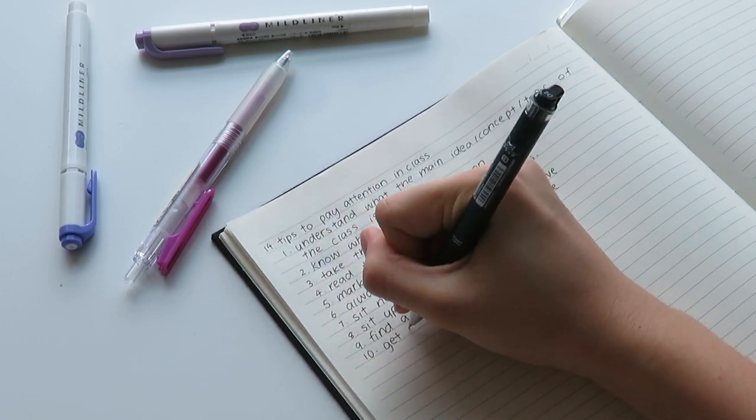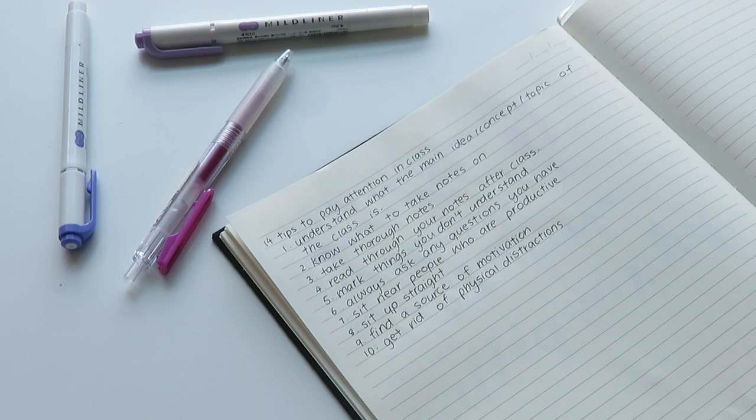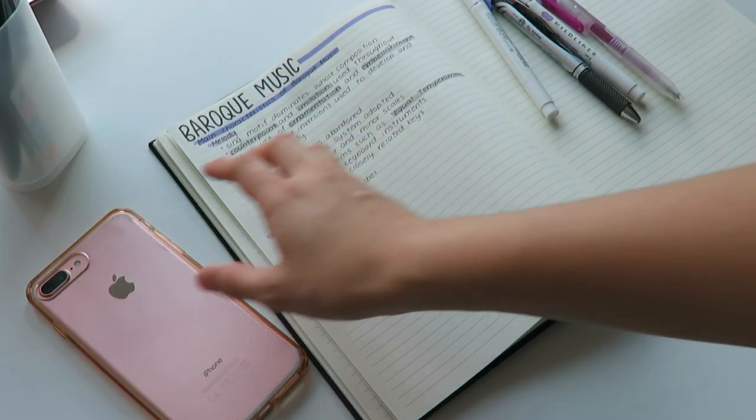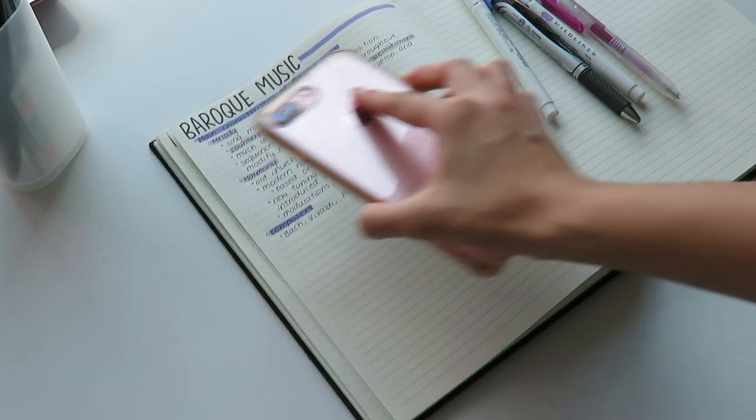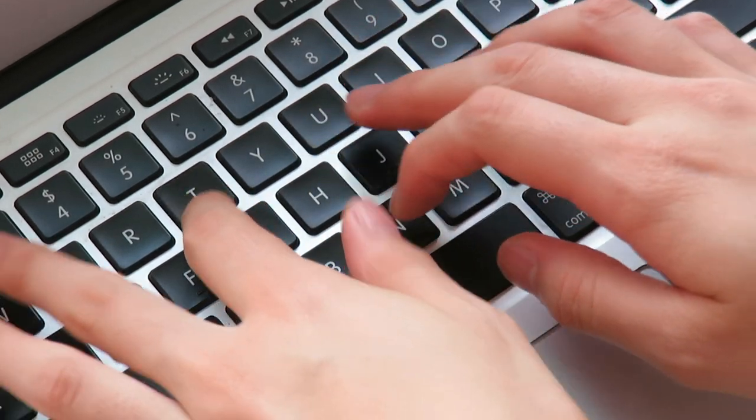The tenth tip is to get rid of physical distractions. This is something that I absolutely stand by. Although it may seem obvious, it is still very overlooked and one of the main causes of being distracted. The obvious physical distraction is a phone.